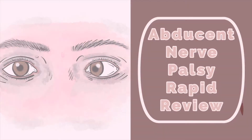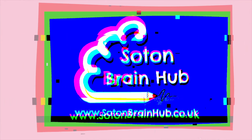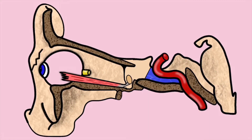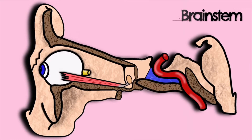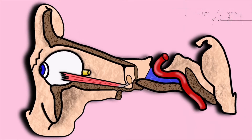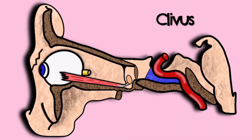Today we are going to be talking about Abducens Nerve Palsy. Here we can see a sagittal section of the skull. We can see the brainstem posteriorly, and moving forward we find the clivus. The clivus forms part of the skull base just posterior to the sphenoidal sinuses.